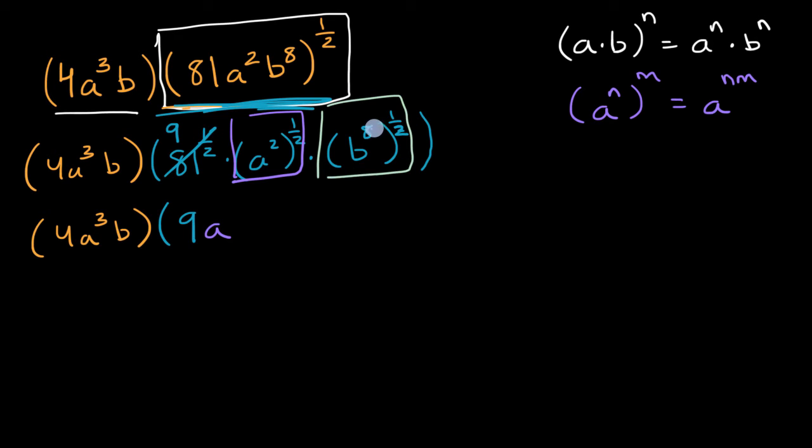b to the eighth, and then I raise that to the 1½, so I could just multiply these two exponents. Eight times 1½ is four. So this is the same thing as b to the fourth power, b times b to the fourth power. And I'll close my parentheses.